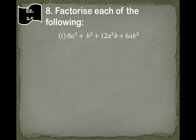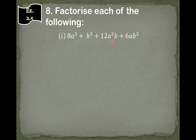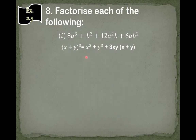Our first question is 8a³ + b³ + 12a²b + 6ab². We have learned two identities of the cube: (x+y)³ and (x-y)³. To identify which identity to use, we have a trick: we look at the sign of the second and third terms. Since both are positive, we will use the (x+y)³ identity.